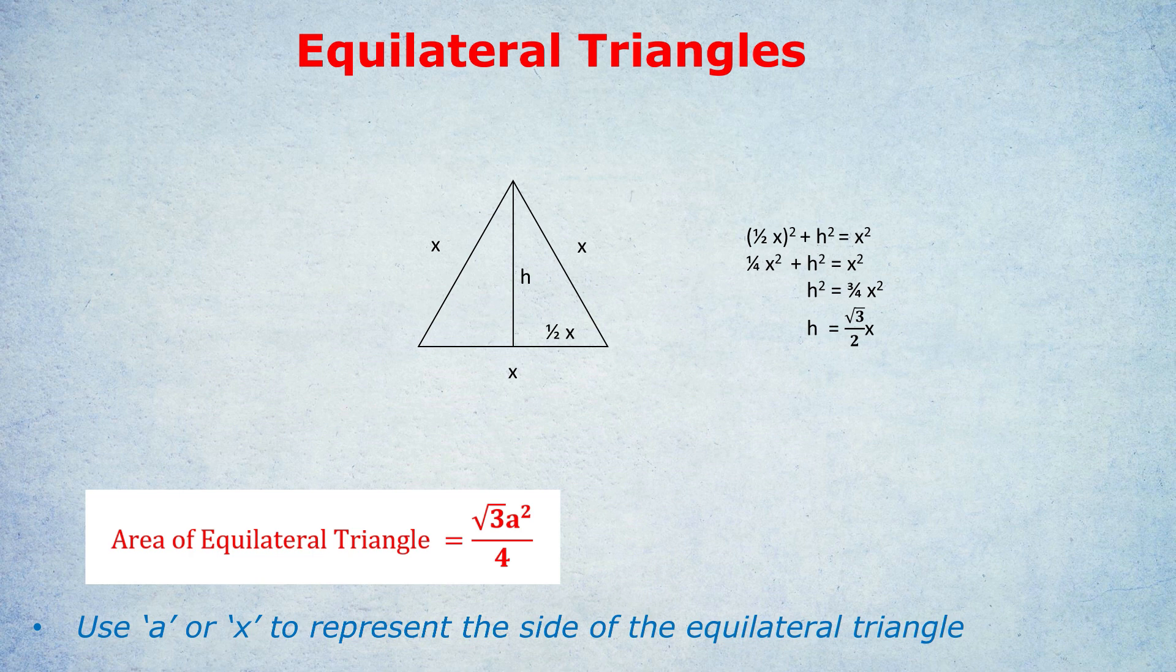Then, and this is always the last step, we square root. So h equals the square root of three over four, which is root three over two x, because the square root of x squared is just x.